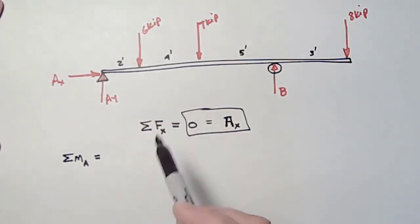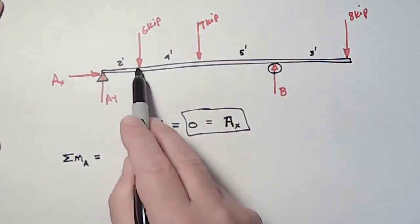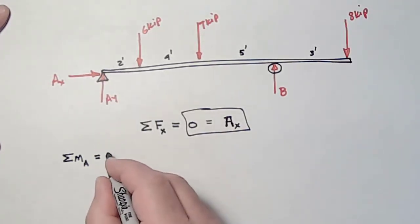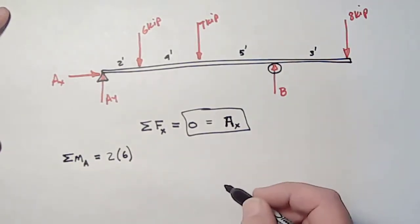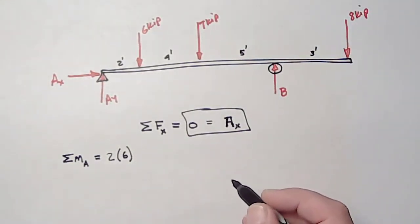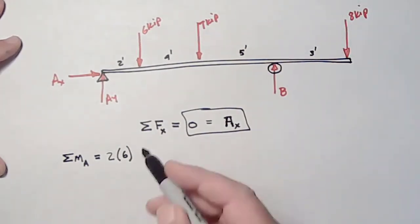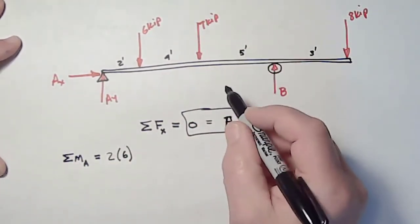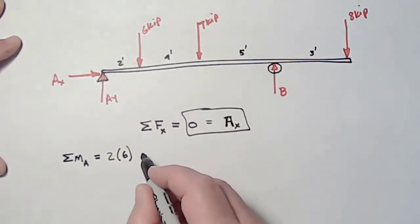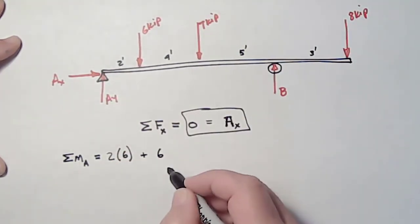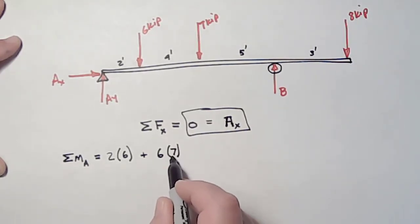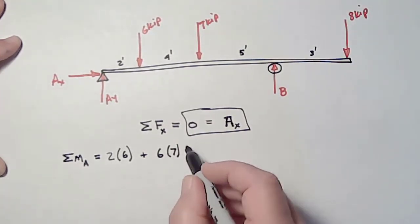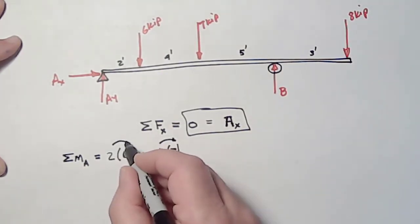Next, I'll look at the six kip force. It's two feet to the immediate right of point A. So its moment arm is two and its force is six. I'll just leave off the kips for now. If I look at the seven kip force, it is two plus four. That's six feet away from the left side of the beam and its force is seven. Distance times force.